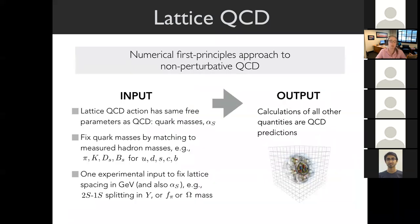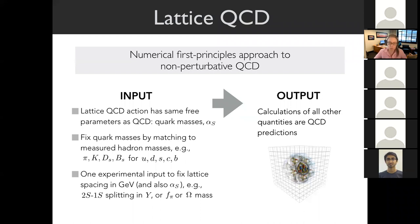This numerical first-principles approach is systematically improvable. The only free parameters are the same free parameters as the theory of QCD itself. Once you fix those by matching to experimentally measured quantities—maybe masses of some particles—then everything else you calculate, all the way up to the structure of carbon, is a prediction from the theory itself.